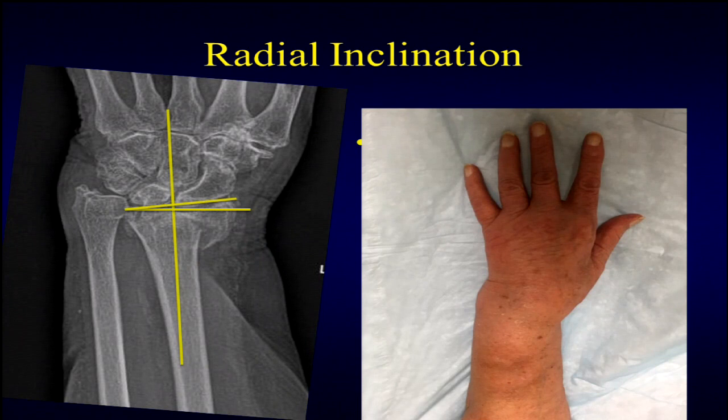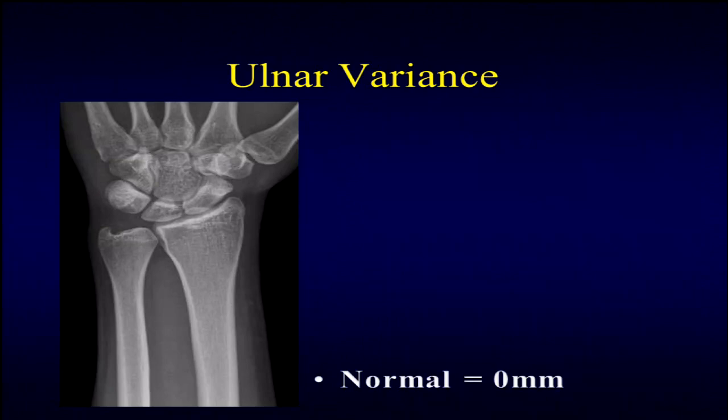When patients have that radial deviation, the hand almost looks shifted over. In elderly patients, the limitations are less strict when considering non-operative treatment, but it's important to advise them that they will have this appearance to their hand.